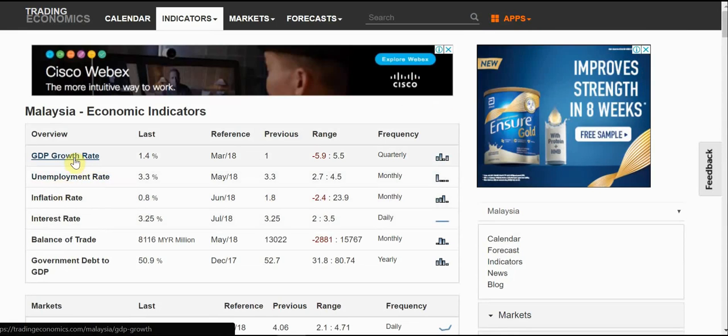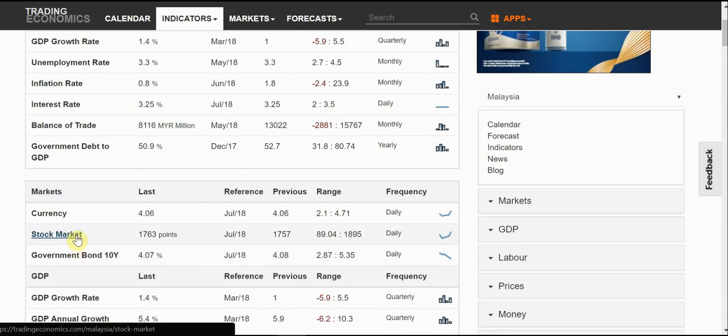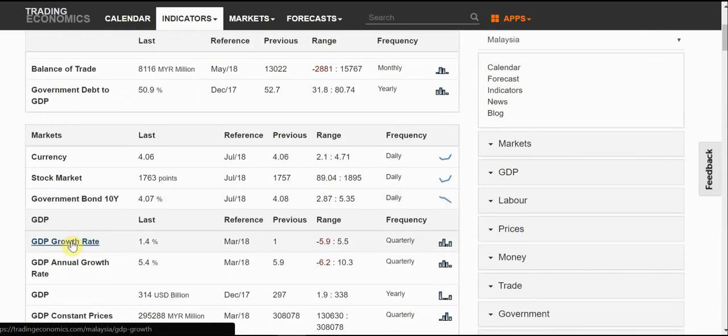Now we just click into one of it, which is our GDP figure. We click our GDP. There's two. One is a quarter to quarter growth rate, and then one is an annual growth rate. Let's take a look at the annual growth rate.